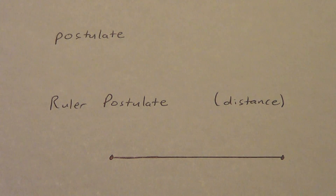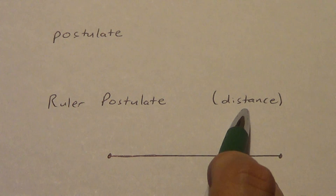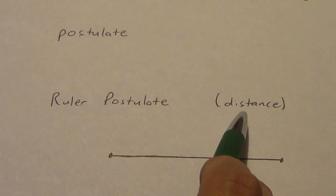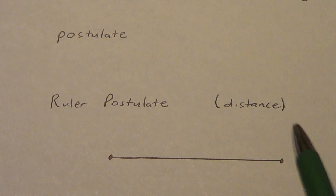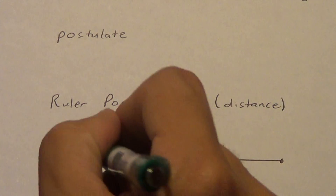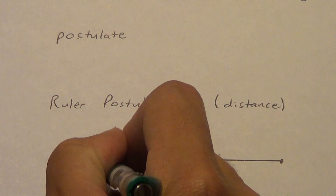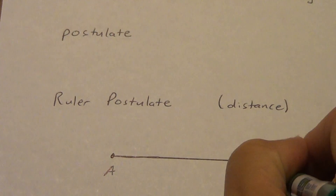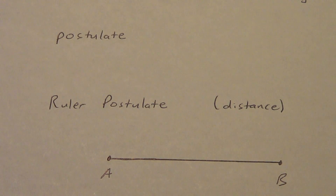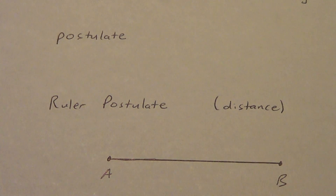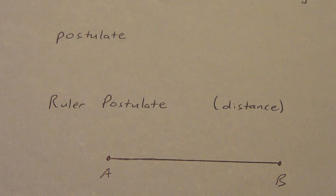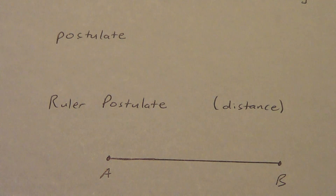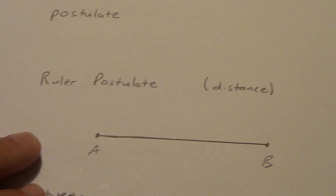The distance between two points A and B is the absolute value of the difference of those coordinates. That's why it's called the Ruler Postulate — I'm going to get a ruler out and show you what's going on here.